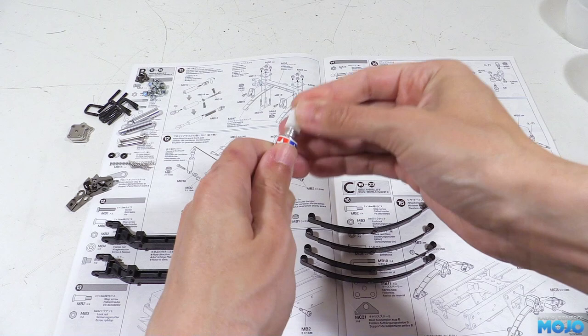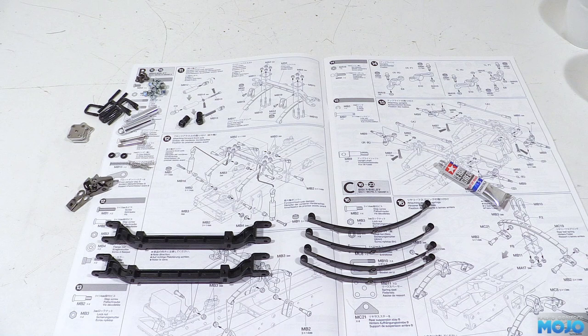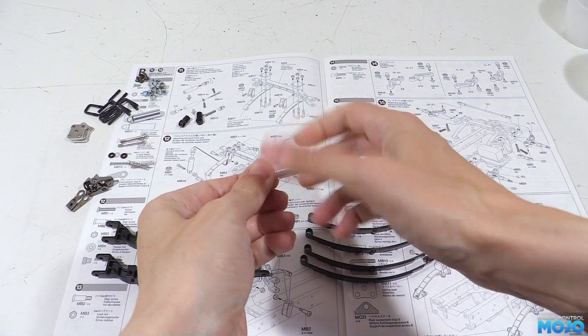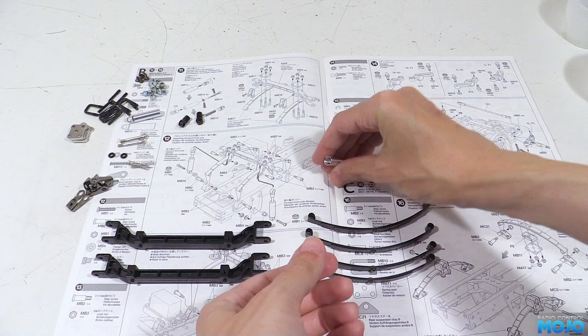First then we'll put the dampers together, so they're done and out of the way. So we can get the shaft and spring in we'll need to unscrew the tops. They're not really proper dampers, so there's no seal to worry about, so they just come straight off.